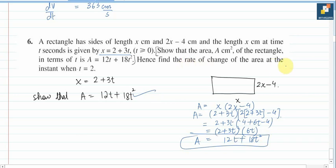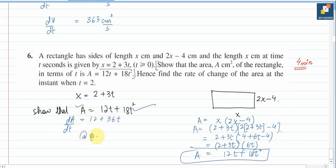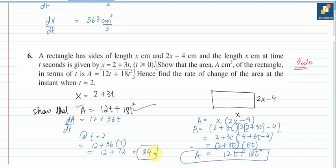Hence find the rate of change of area when t = 2. We have A = 12t + 18t², so dA/dt = 12 + 36t. Substituting t = 2: dA/dt = 12 + 36 × 2 = 12 + 72 = 84 cm² per second. That is the rate of change of area.